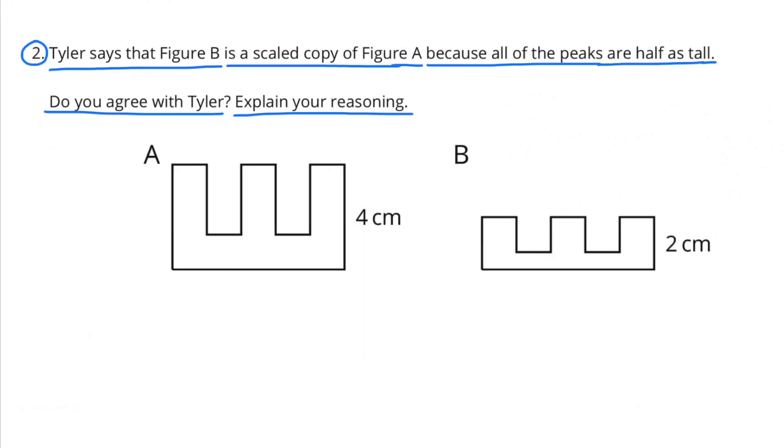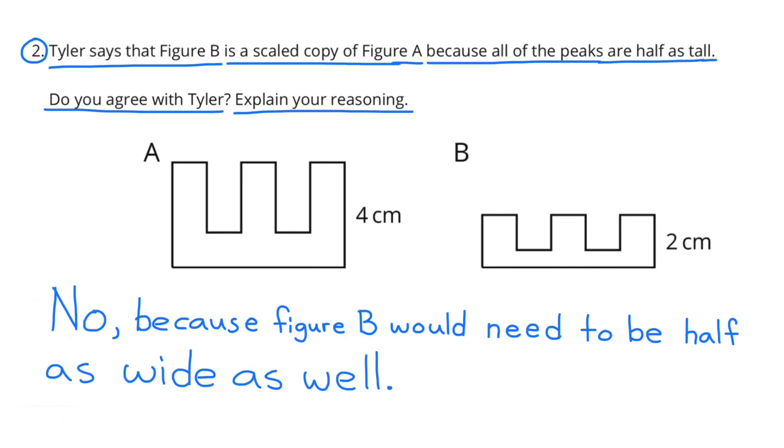Number two. Tyler says that figure B is a scaled copy of figure A because all the peaks are half as tall. Do you agree with Tyler? Explain your reasoning. No, I don't agree with Tyler because figure B would need to be half as wide as well as half as tall.